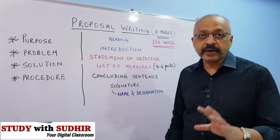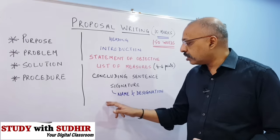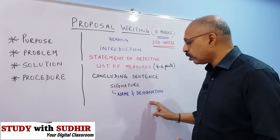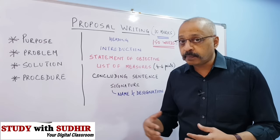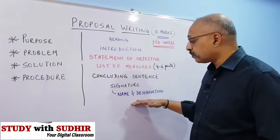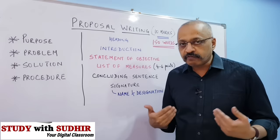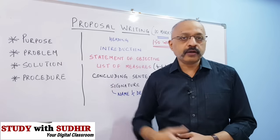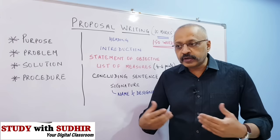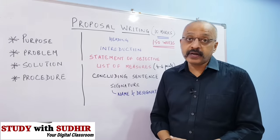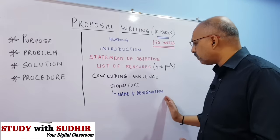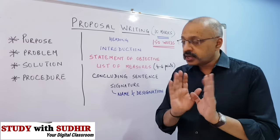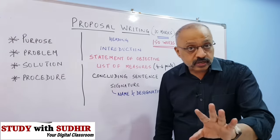For your linguistic ability it carries another two marks. Regarding the signature and name and designation — the ICSC council format does not explicitly prescribe it, but I would suggest including it. When we present a proposal to any company, they would want to know who has actually prepared it, which is why this part is also important. So write the signature, name, and designation.